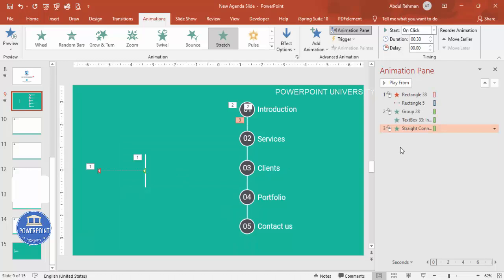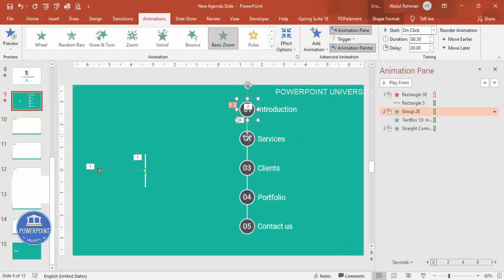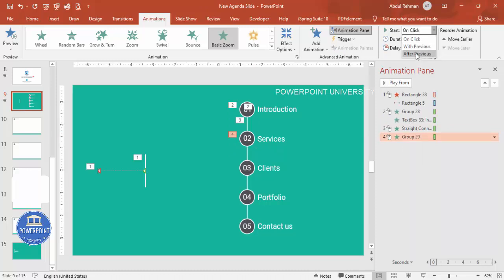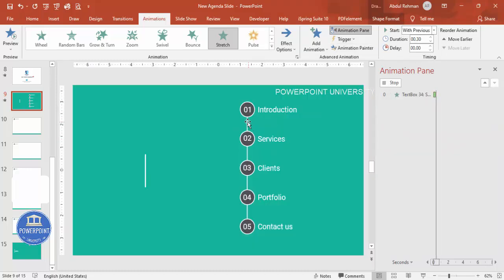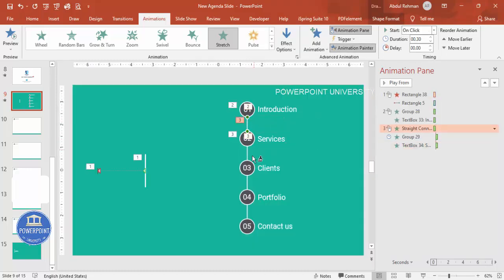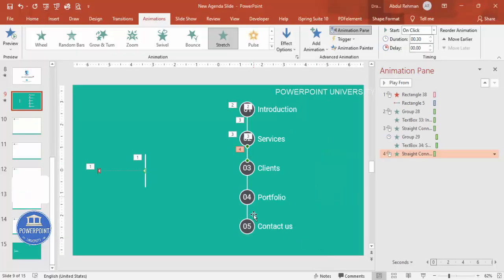Set the label animation to Start After Previous so it follows the zoom effect. Then select the first animated element and use Animation Painter — click on it, then click on each remaining agenda item to copy the same animation effects. If you preview now you'll see: the cover slides away, then the agenda appears with Introduction, then the second item, third, and fourth all with the same animation effects.